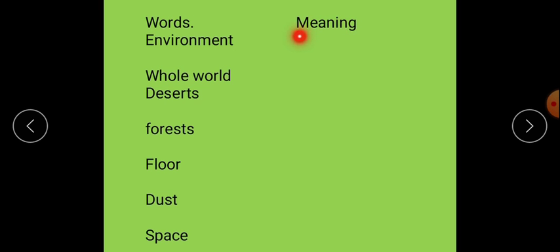Words: Environment - Urdu meaning is mahal. You have to write here Urdu meaning mahal. Next word is whole world - whole world means sari dunia. Next word is deserts - deserts means sehra ya registan. Forest - janglaat.